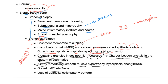Goblet cell metaplasia: normally bronchioles have no goblet cells whatsoever, but in asthma there is metaplasia and goblet cells appear in the bronchioles. These goblet cells secrete mucus. That's why patients with asthma have the clinical triad of cough, wheezing, shortness of breath, and mucus production. There is also loss of epithelial cells in a patchy pattern due to macrophages and eosinophils.